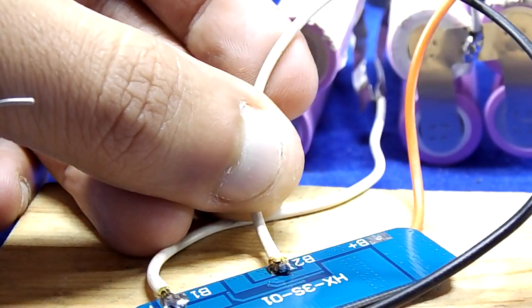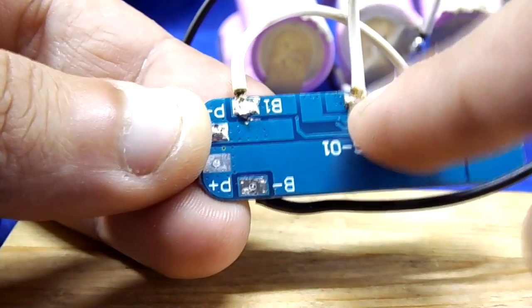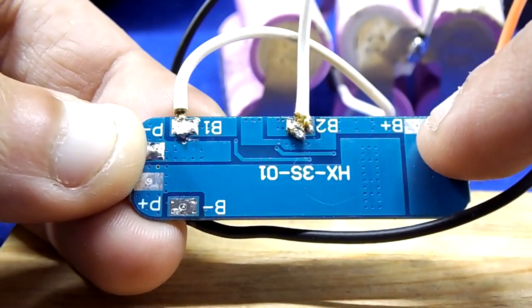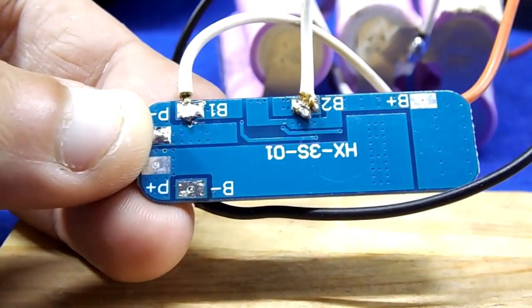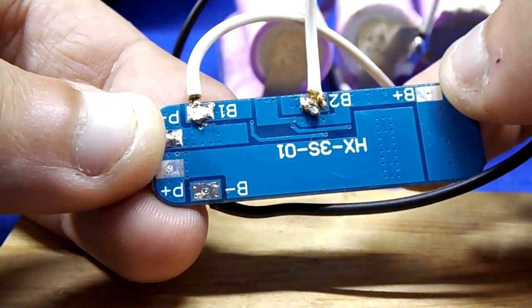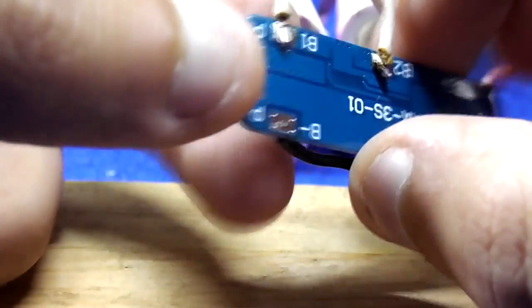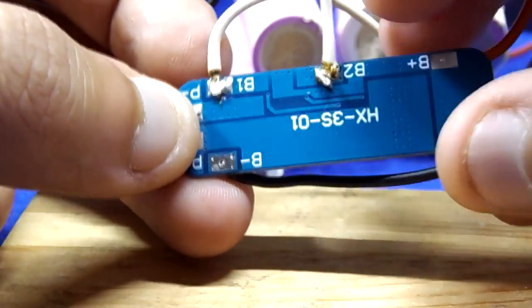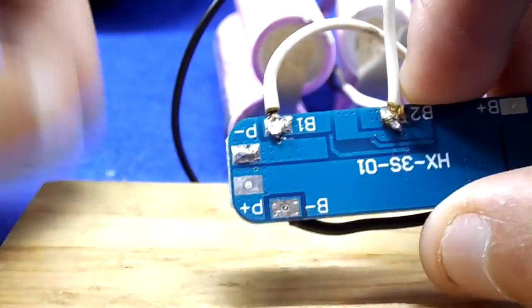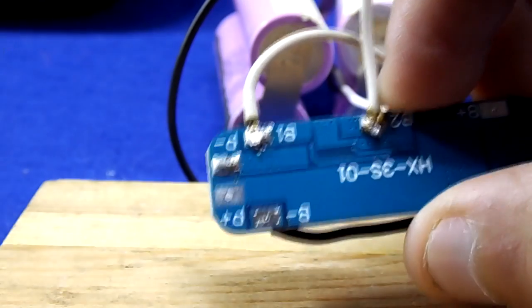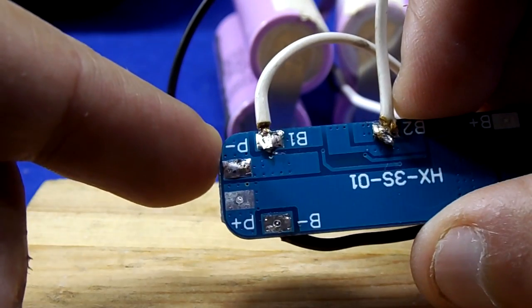Let me explain it again: B minus is connected to the whole pack negative, B1 is the next positive, B2 to the next positive, B plus to the whole pack positive. B plus and B minus is battery pack in and out.